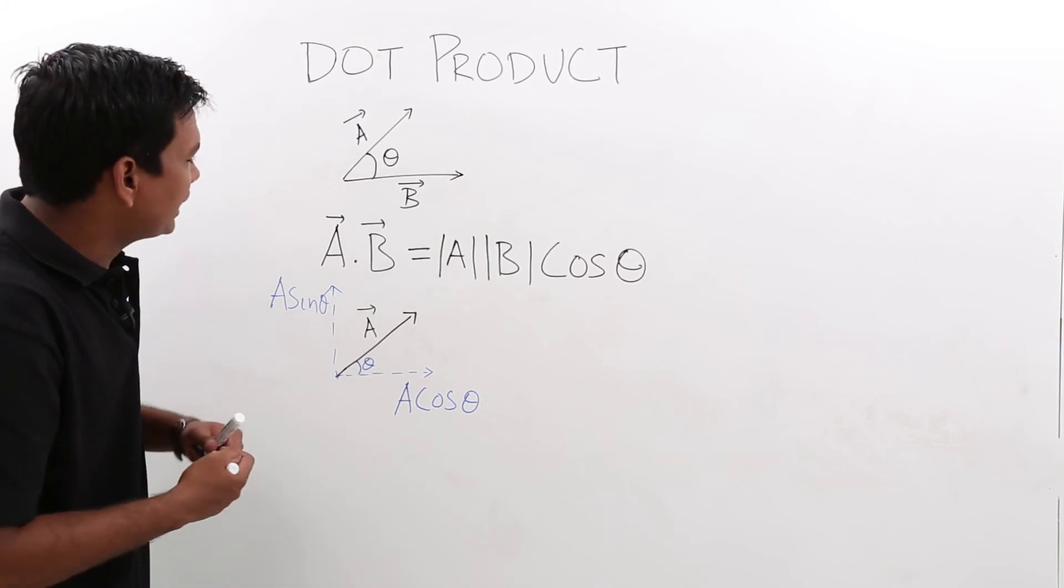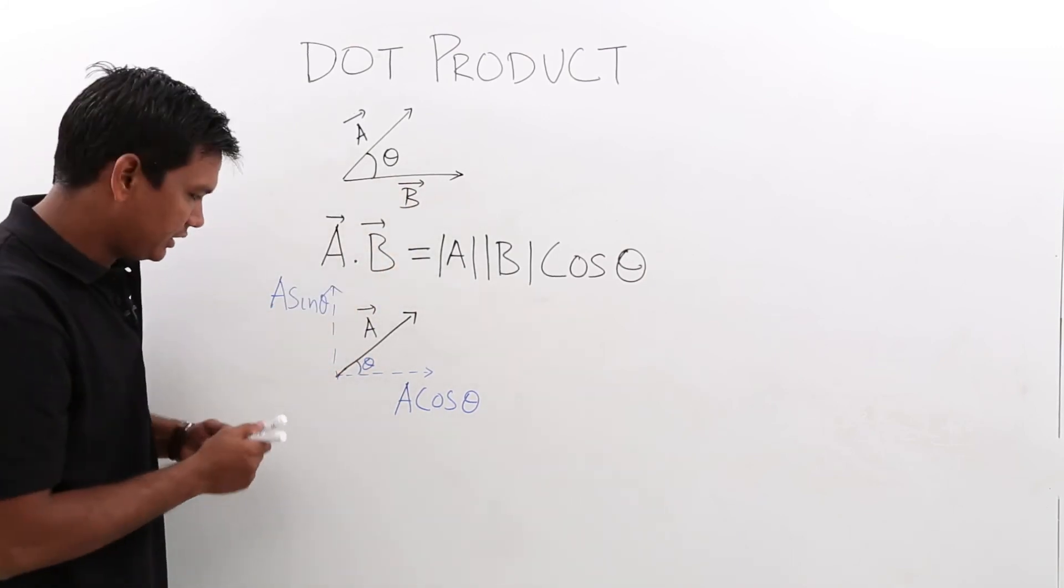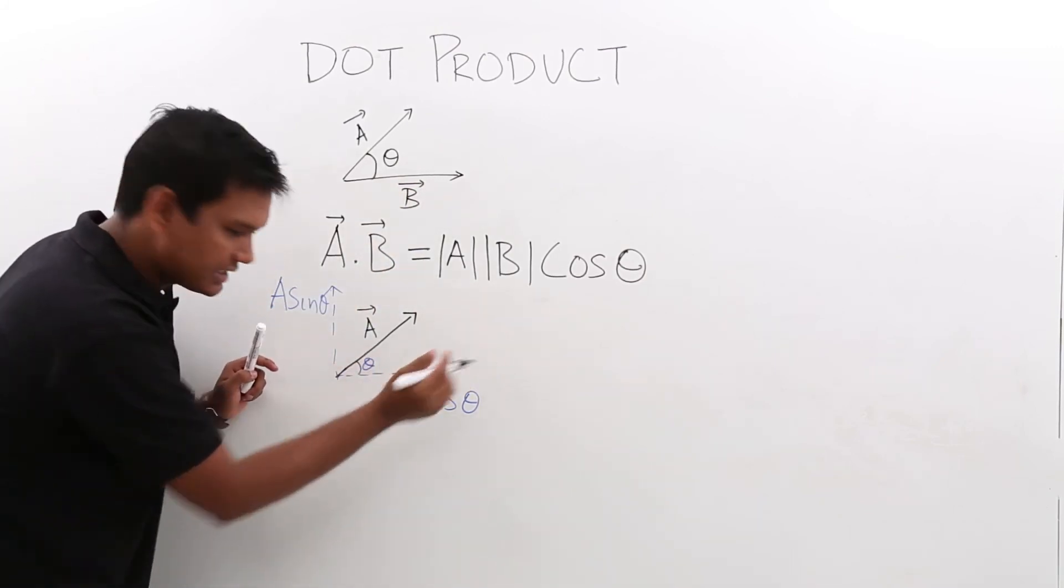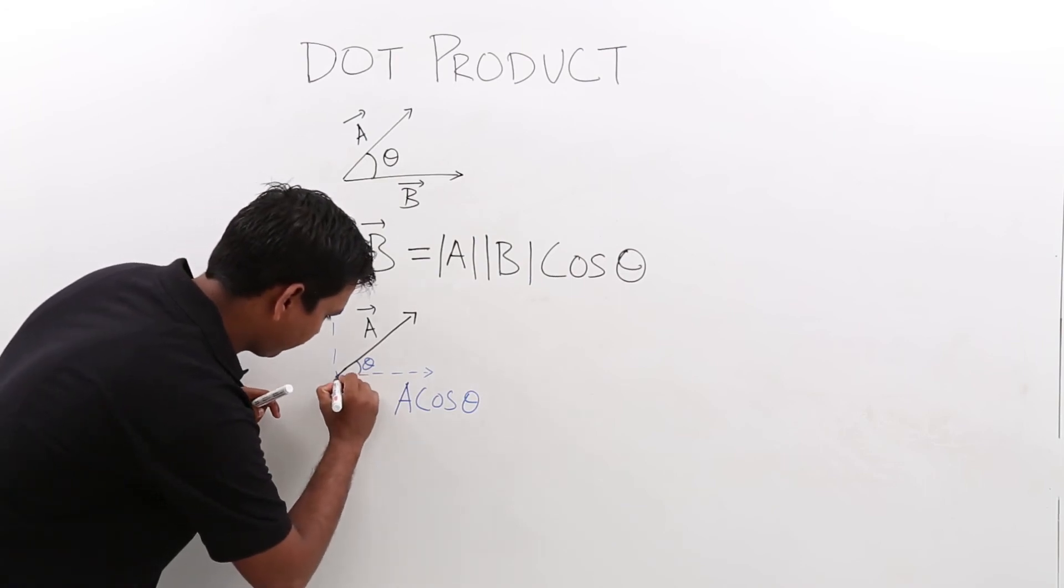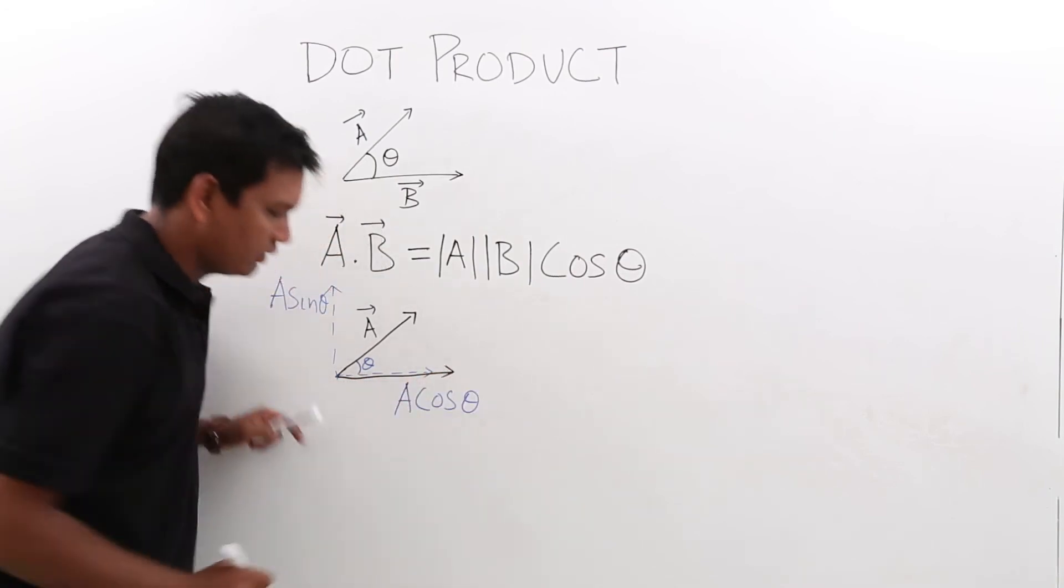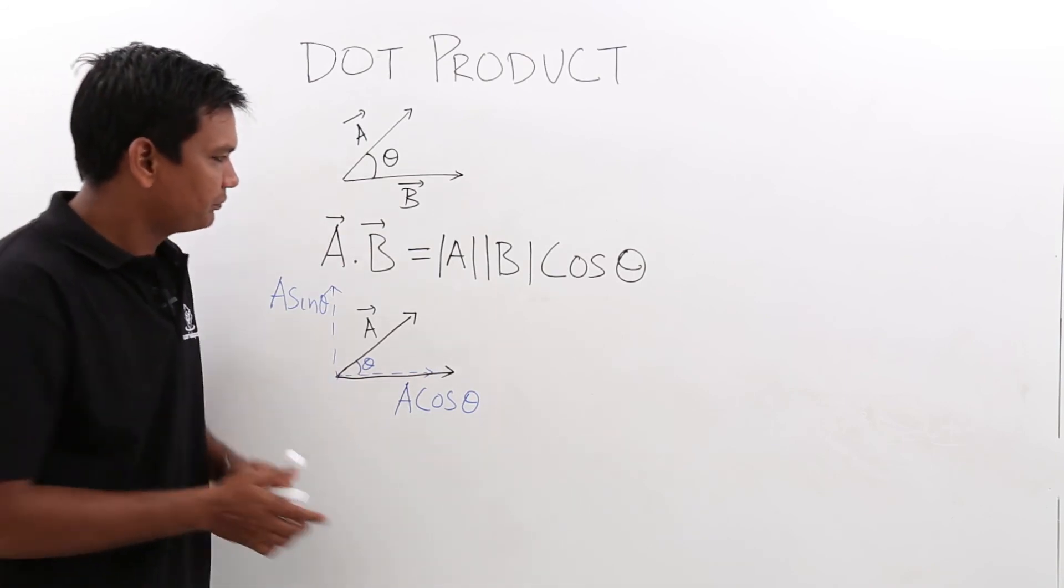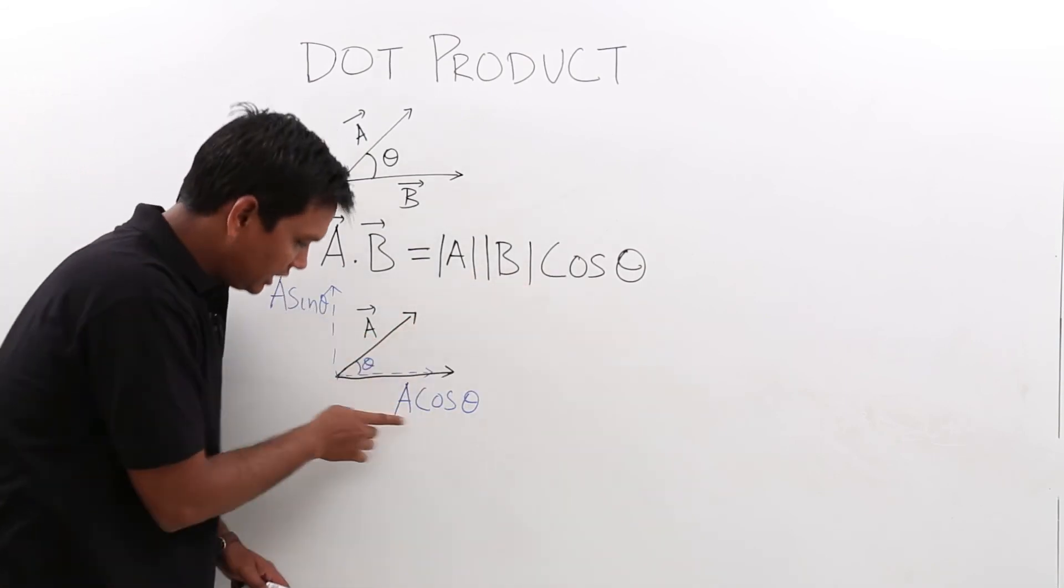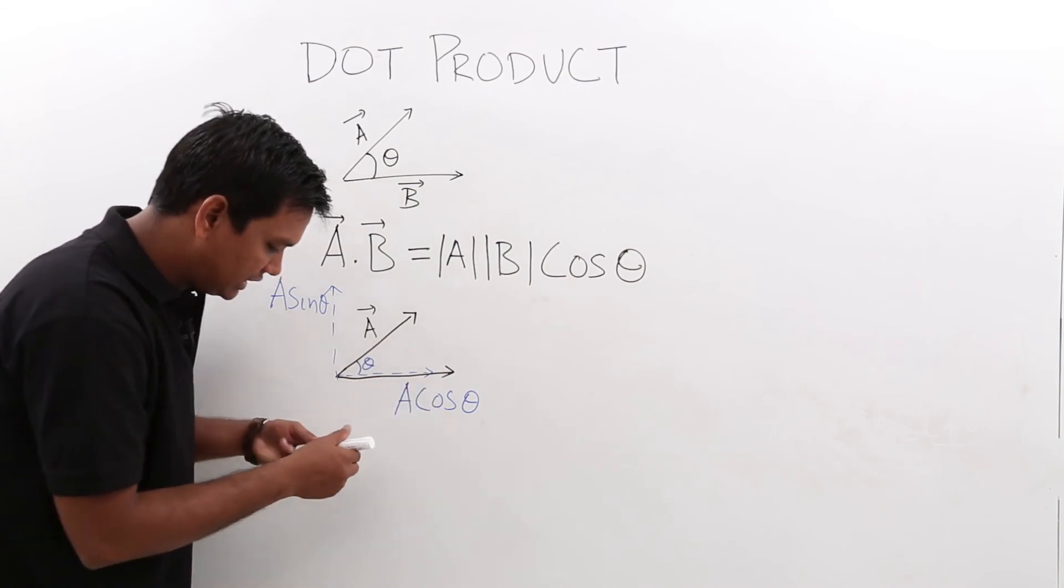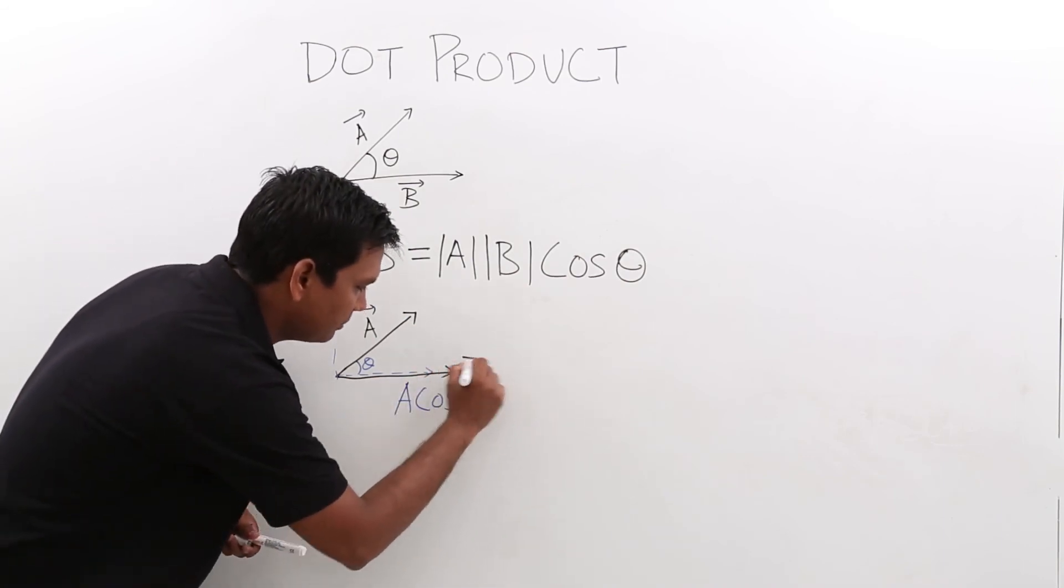So now, again if I try to draw the B vector, B vector is along the x axis. So it would be along the A cos theta. Now if you observe, this is A B cos theta and this is A cos theta and this vector is B vector.